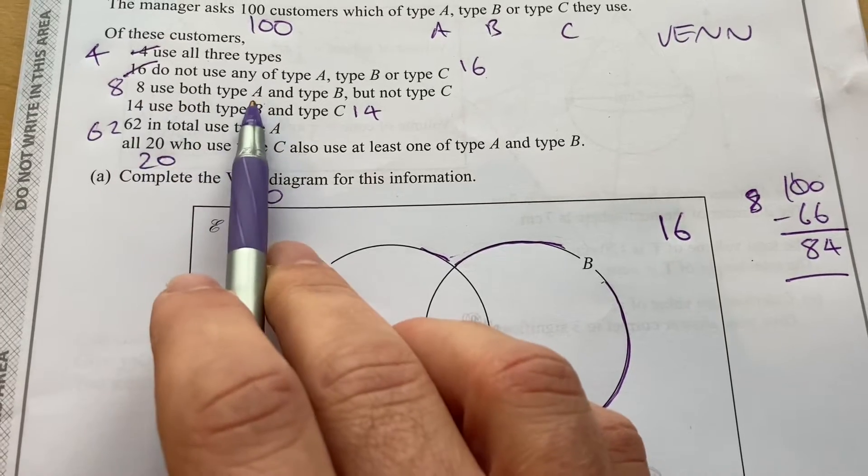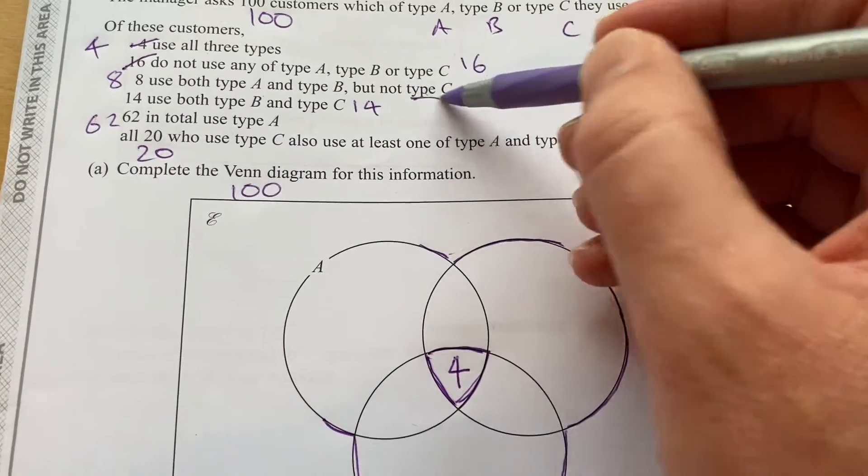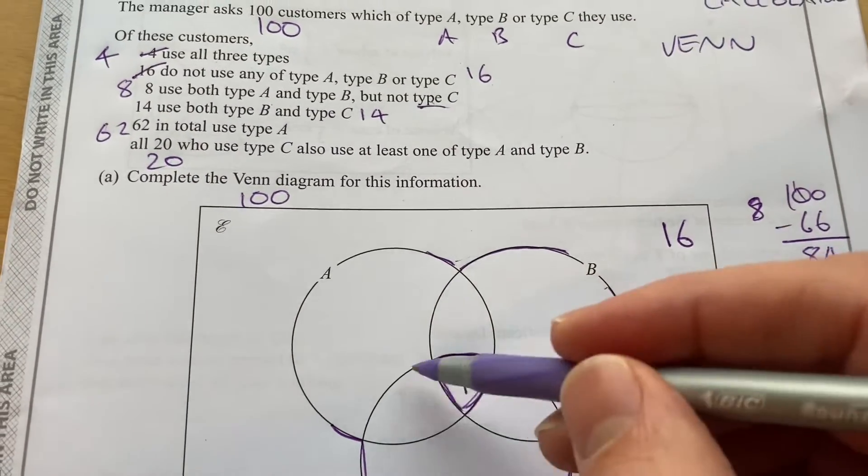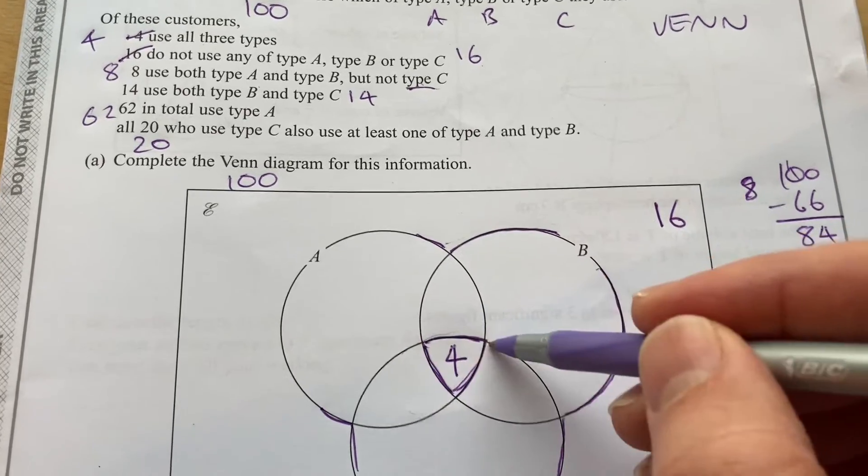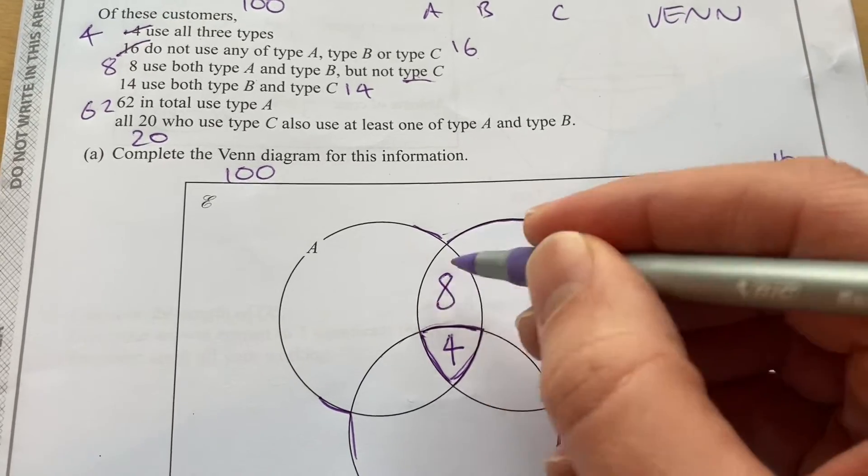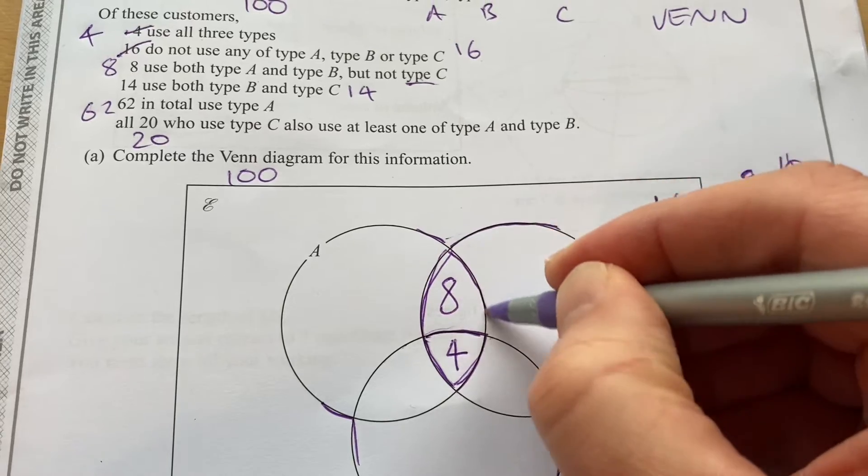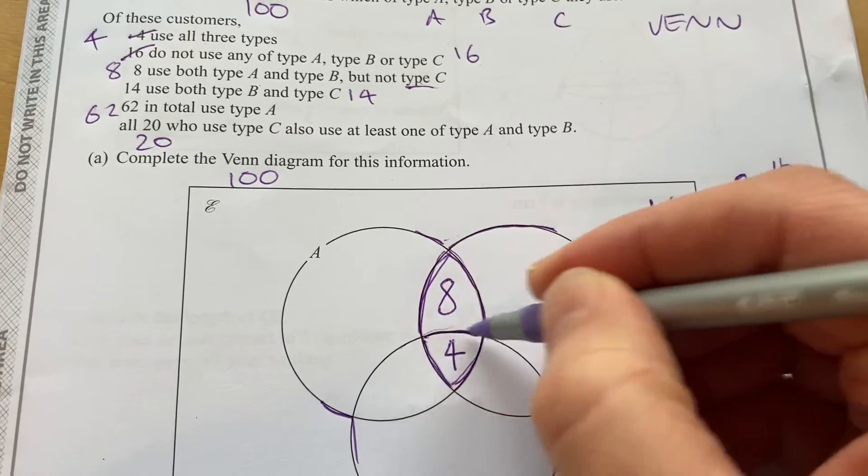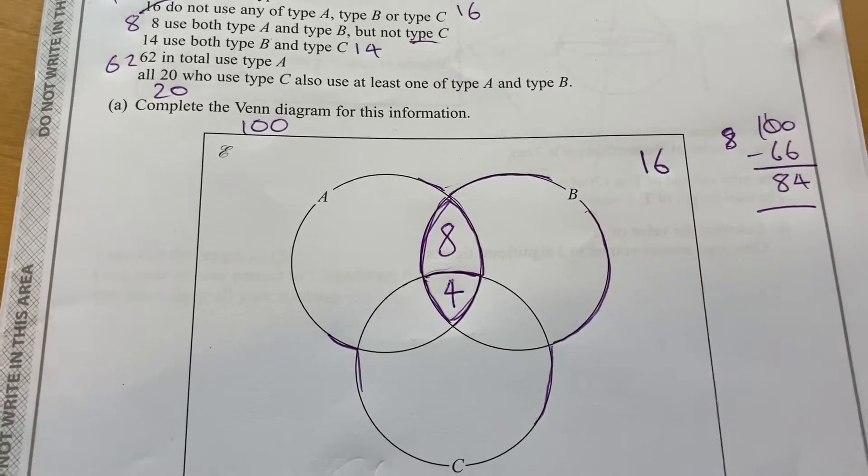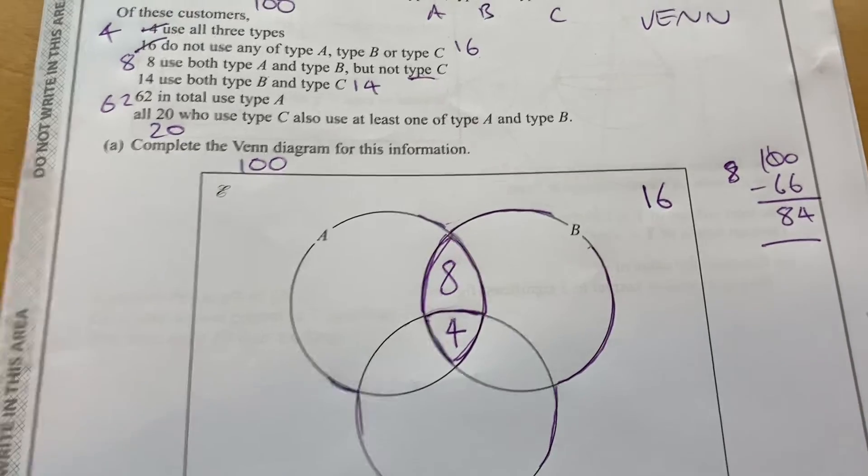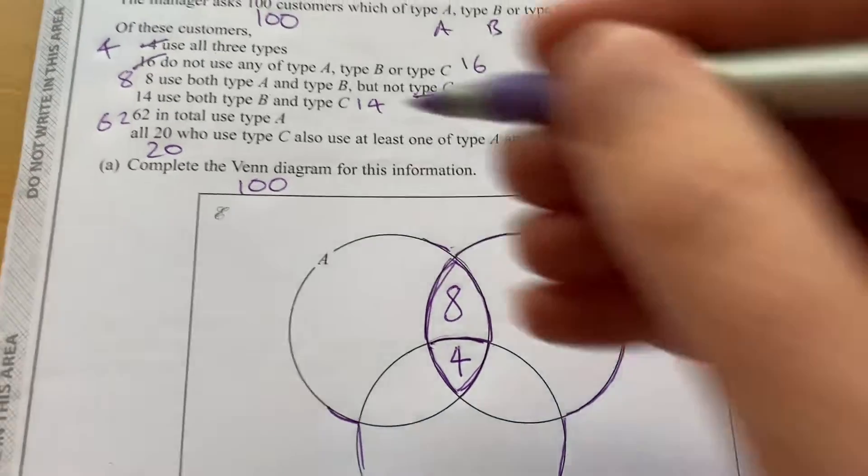Then it says 16 do not use any of A, B or C. So they're going to fall outside of this set of overlapping circles. So 16 are going to go there. Because 100 minus 16 is 84, I know that this union of all three has got to be 84. Now 8 use both type A and type B, but not type C. So outside of C, we're going to have an 8. So this section here is A and B, but not C.